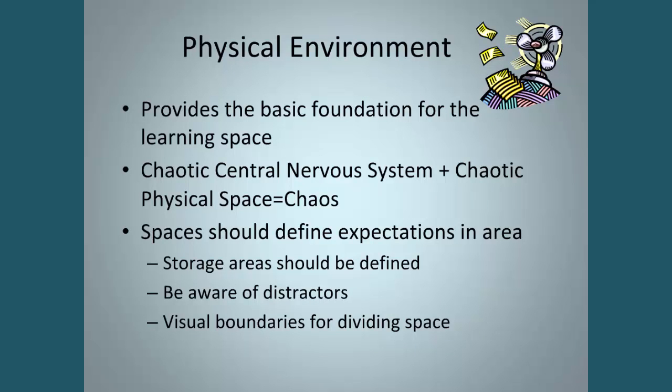Let's start with the physical environment. The physical environment really provides the basic foundation for the learning space. And because children with Autism have disorganized nervous systems, it's really important that their physical environment or their learning space be organized and delineated for them. Because if you have a chaotic nervous system and then you put a chaotic physical space together, guess what you get? Chaos.